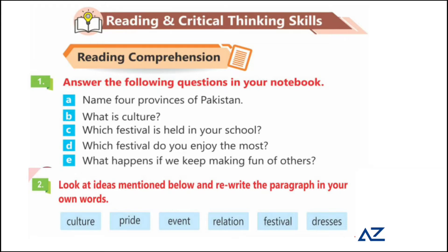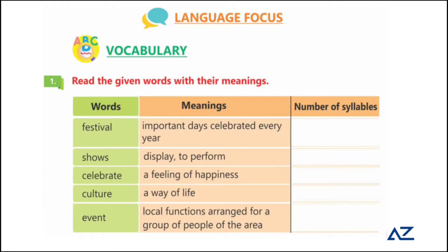Words in the word bank include: culture, pride, even, relation, festival, and dresses. Read the given words with their meanings — the words and meanings are provided — and you have to find out the syllable count in each word. For example, the first word is 'festival,' meaning an important day celebrated every year — it has three syllables. Other words: show/display, celebrate, happiness, culture — a way of life, event — a local function arranged for a group of people.